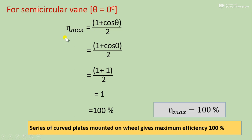When theta equals zero, maximum efficiency formula gives (1 plus cos 0) divided by 2 equals (1 plus 1) divided by 2 equals 1, meaning 100%. This means a series of curved plates mounted on a wheel gives maximum efficiency of 100%.